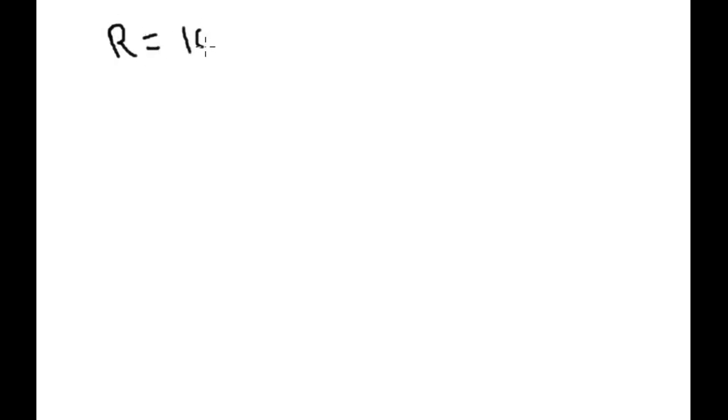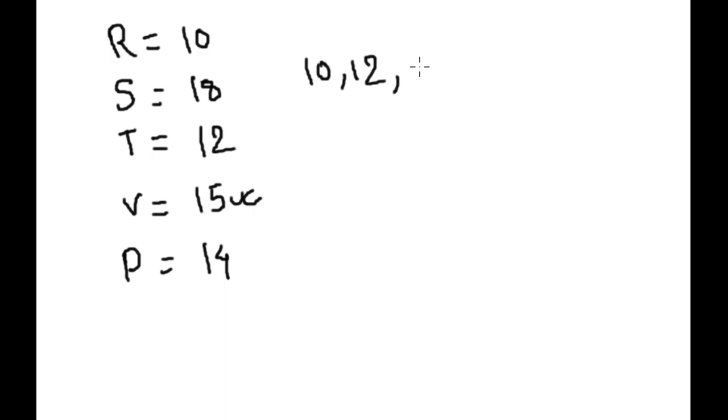Let's suppose student name R, age 10 years; S, age 18 years; T, age 12 years; B, 15 years; P, 14 years. Now it is easy to find out below 15 years. So it is 10, 12, and 14 below 15 years.